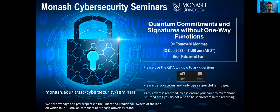Welcome everyone to today's Monash Cybersecurity Seminar, which will probably be the last one of the year. Today we are very happy to welcome Tomoyuki Morimae, who is an Associate Professor at Yukawa Institute for Theoretical Physics at Kyoto University in Japan. He got his PhD from Tokyo University in 2009, and his research interest is in quantum complexity theory and quantum cryptography. He will talk to us about quantum commitments and signatures without one-way functions. Thank you very much, Tomoyuki.